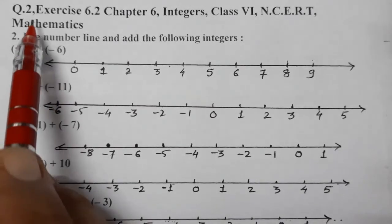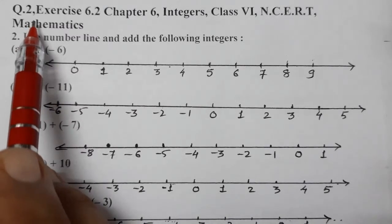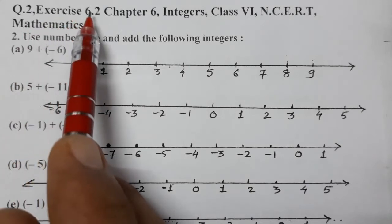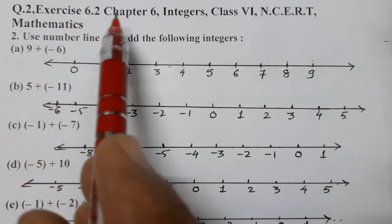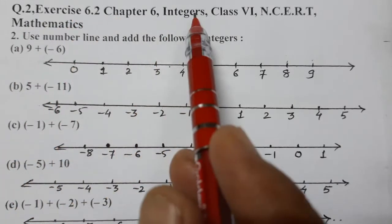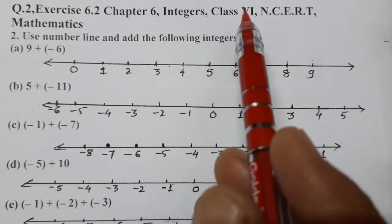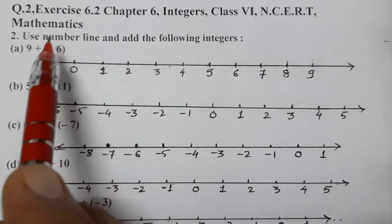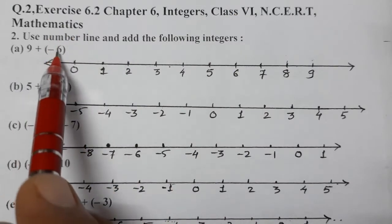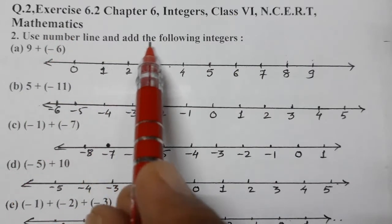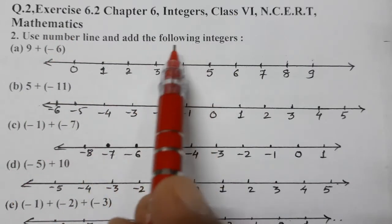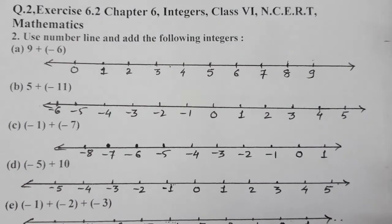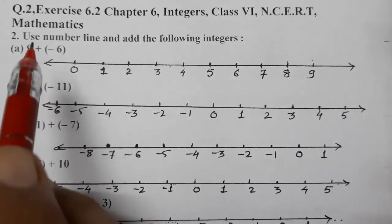Hello students, today we are going to do question number 2 of exercise 6.2, chapter number 6, Integers, class 6 mathematics. Using the number line, we have to add the following integers.